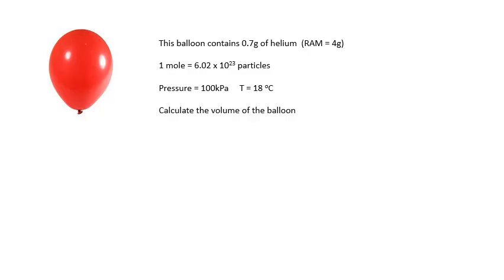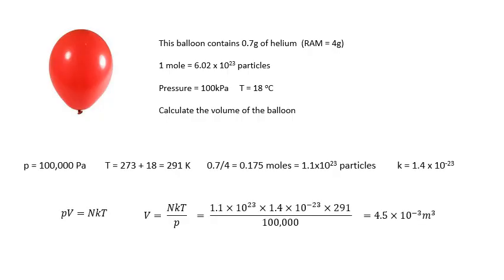One more example — have a go yourself first. Calculate the volume of the balloon. Data: pressure = 100,000 Pascal; temperature = 291 K; number of particles calculated by dividing 0.7 by 4 to get moles, then multiplying by Avogadro's constant (6.02 × 10²³) to get number of particles. Rearranging pV = NkT gives V = NkT / p. Substituting gives 4.5 × 10⁻³ m³, or 4.5 liters.